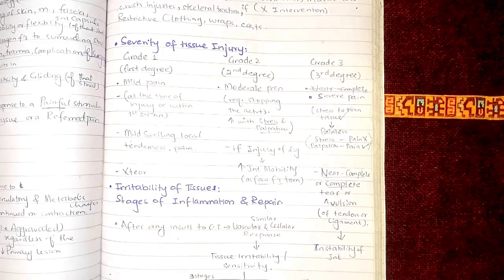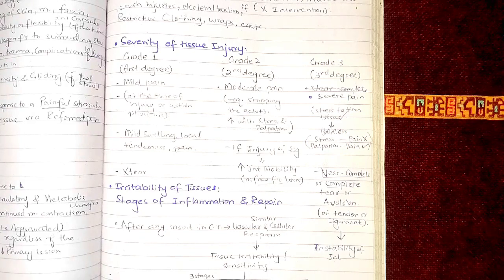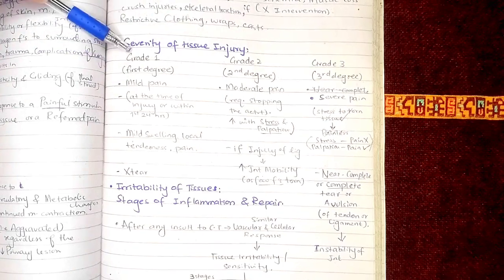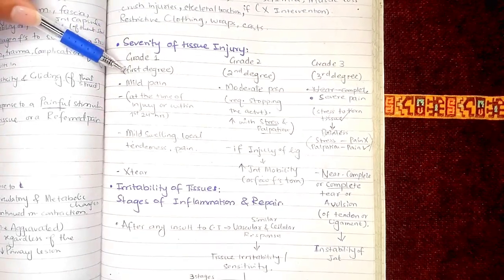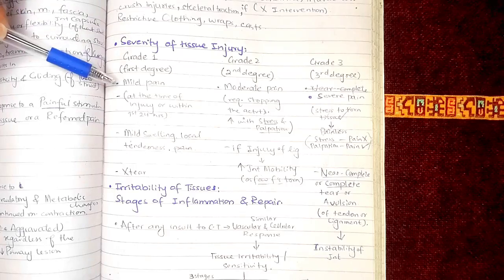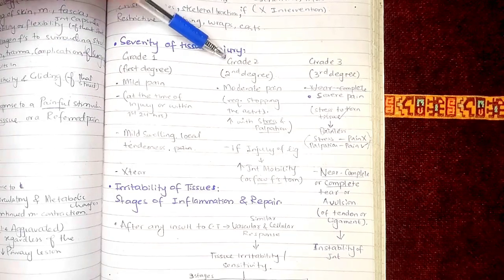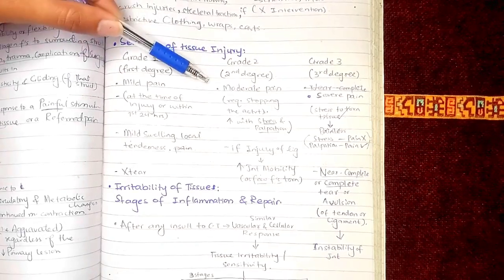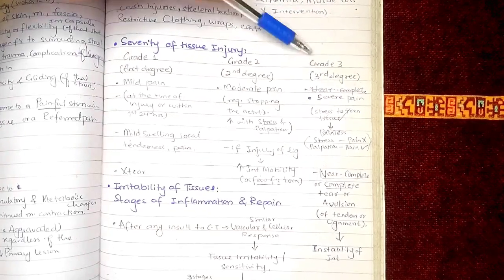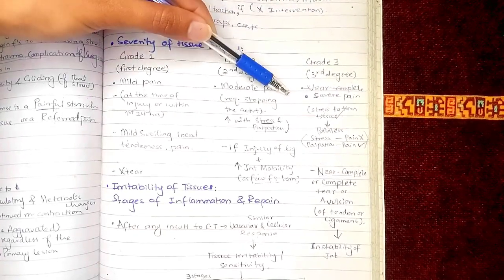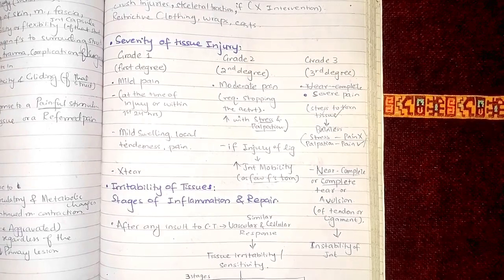In this video we are going to be discussing about the severity of tissue injury. The severity of tissue injury includes three grades: grade one, which is also known as first degree, with mild pain; grade two, which is the second degree, with moderate pain; and grade three, the third grade, with severe pain.